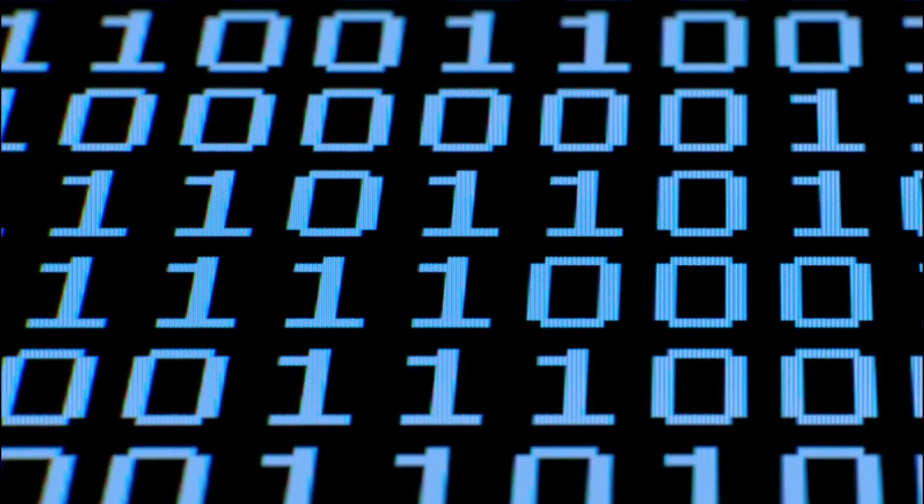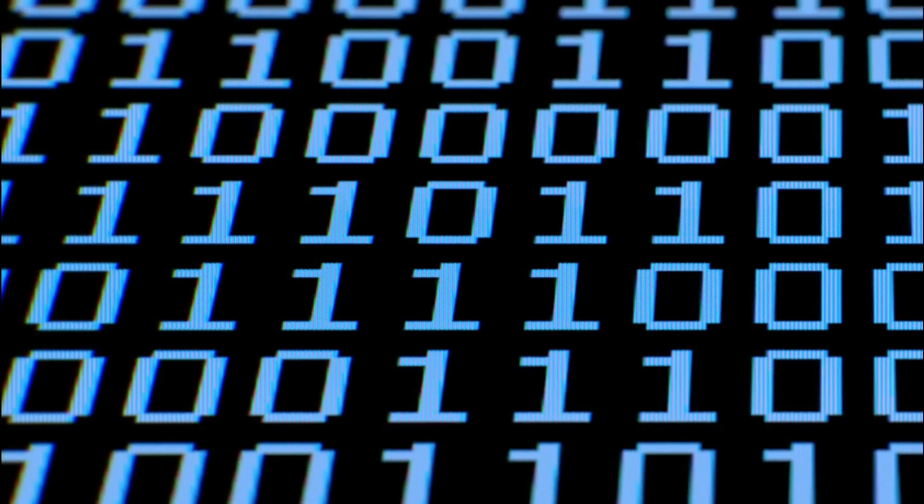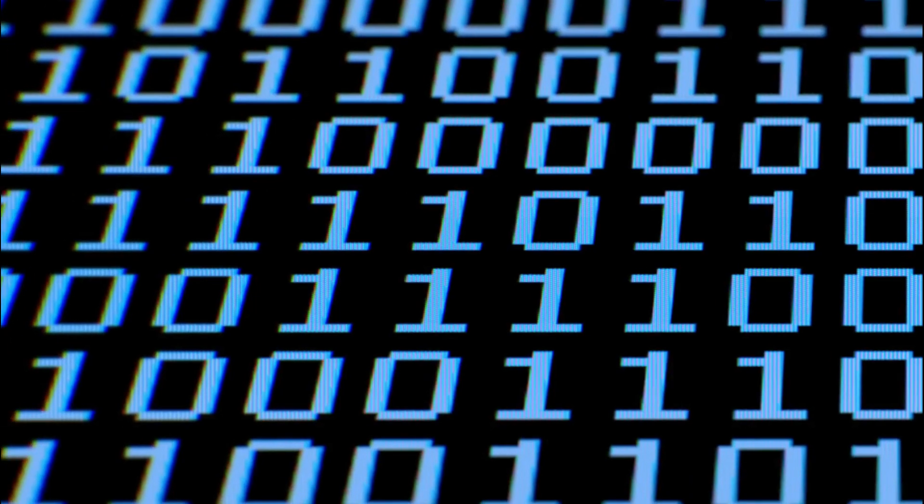However, quantum computers are much more powerful. That's because they store data in qubits, which have a special property that allows zeros and ones to exist simultaneously. This seemingly small thing gives quantum computers the ability to do exponentially more calculations at once, making them powerful enough for incredibly complicated tasks.